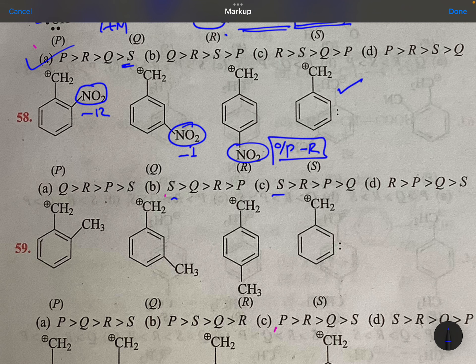So it should be Q, then R, then P. This is at para position, this is at ortho position. Ortho is very dangerous, very dangerous position, very immediate.